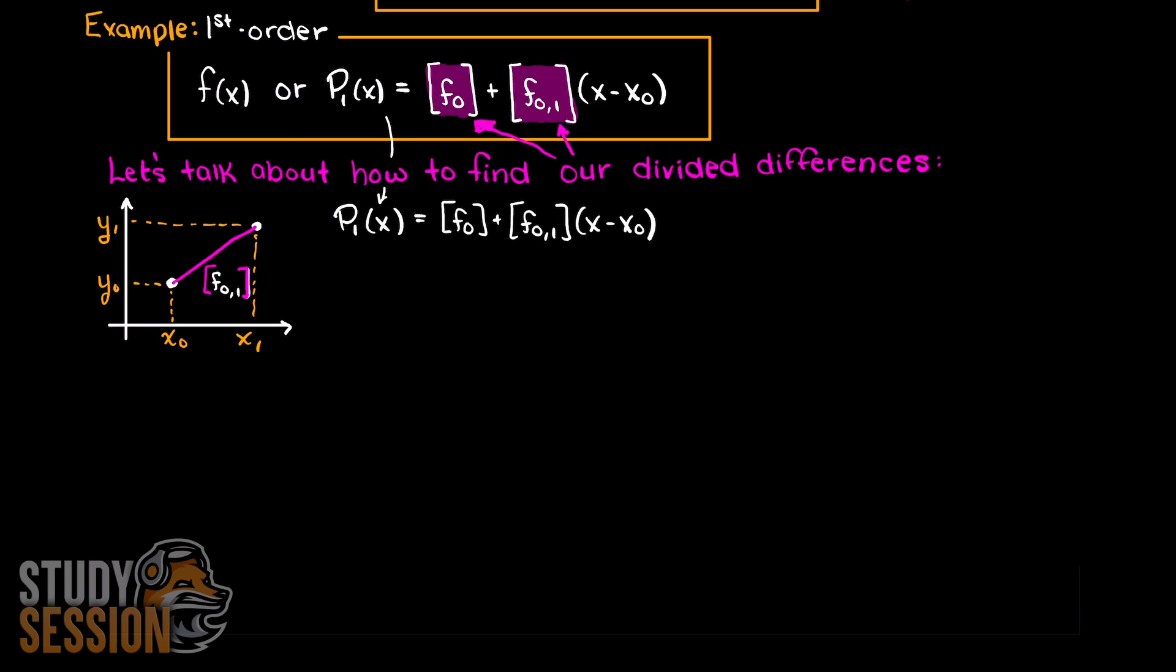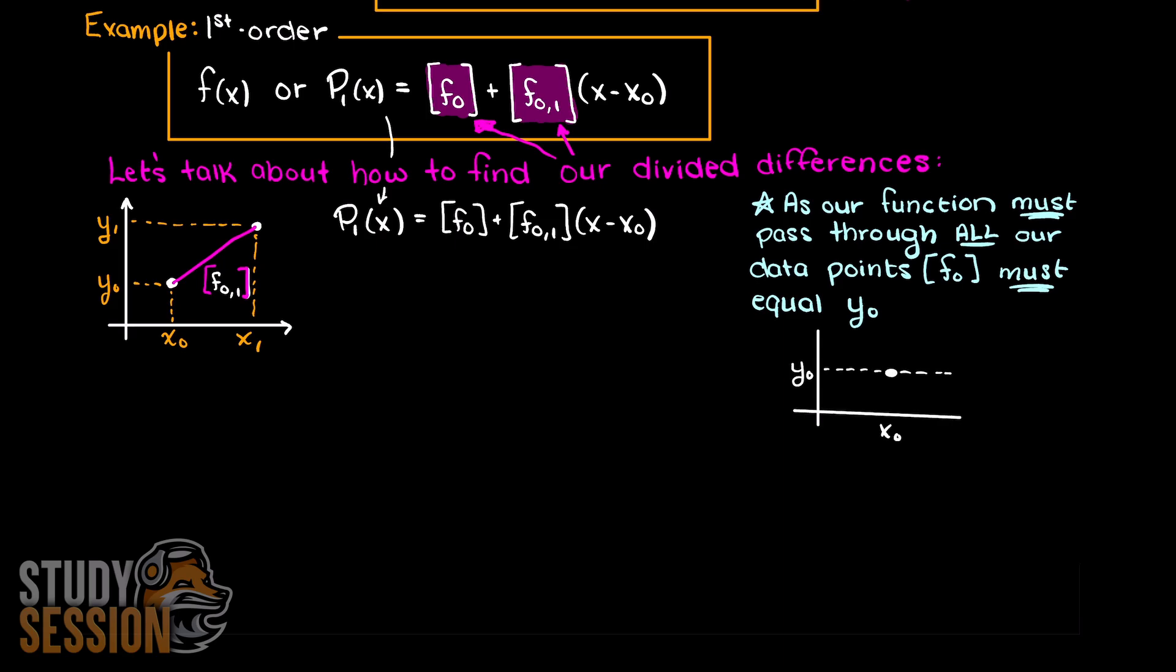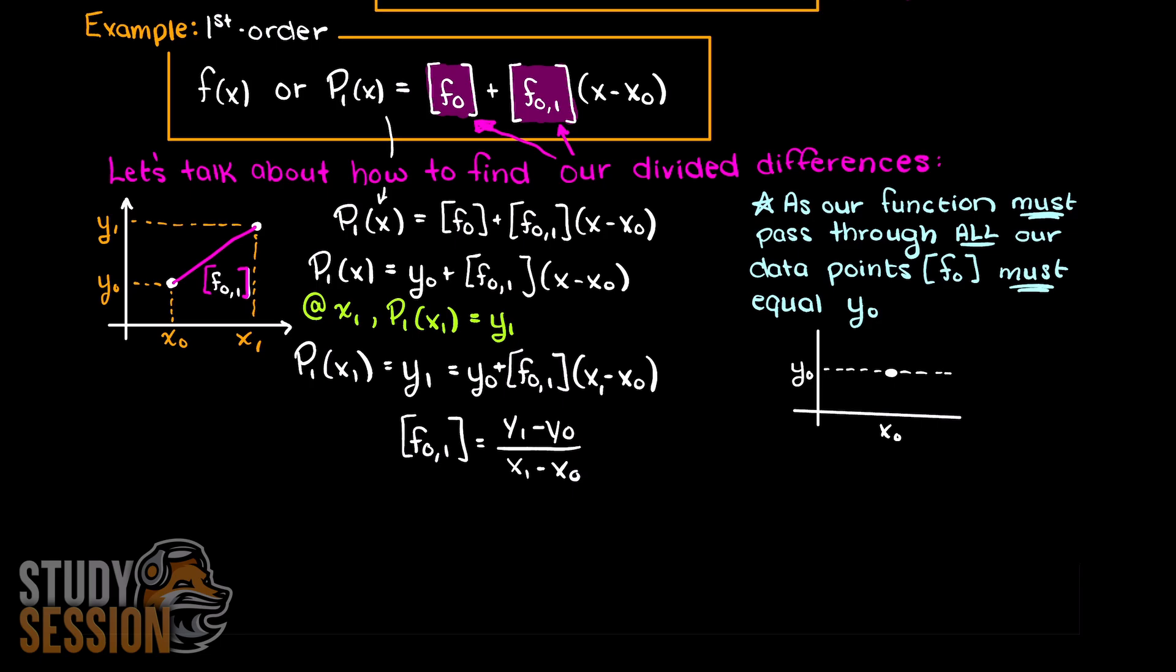The divided difference of f0 will simply be y0, as if you think about it, with only one point our polynomial must pass through every point, therefore it can only logically be y0. At x1, we know that our Newton polynomial will have to be y1, as it must pass through all of the points. Therefore, we can rearrange for this coefficient that we wish to solve for, and we can do that like so. And there we go, we just found the divided difference coefficient for a first order Newton's polynomial. I will link a great video in the description down below for a second order derivation if you're interested.